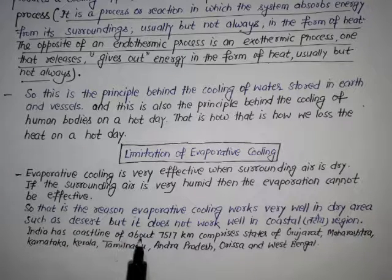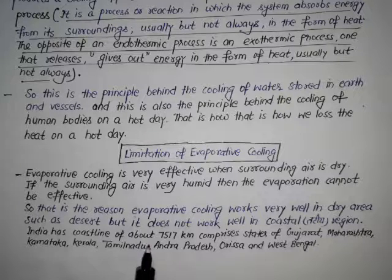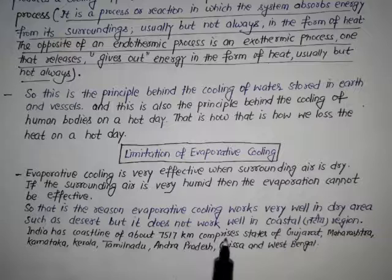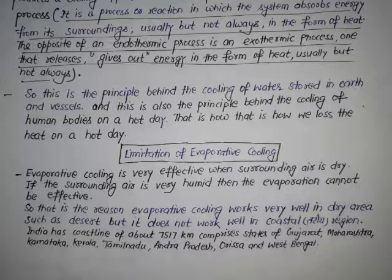But evaporative cooling does not work well in coastal regions. India has a coastline of about 7,517 km, comprising states such as Gujarat, Maharashtra, Karnataka, Kerala, Tamil Nadu, Andhra Pradesh, Odisha, and West Bengal — these are all coastal regions in India.